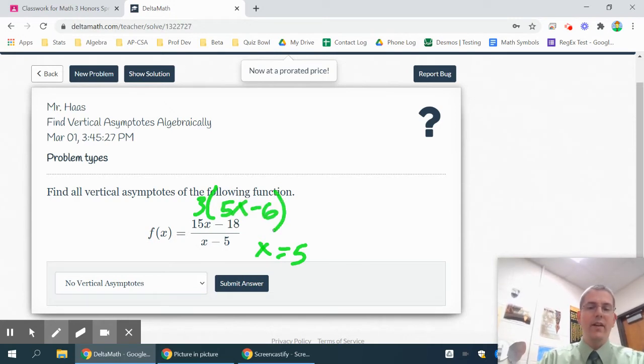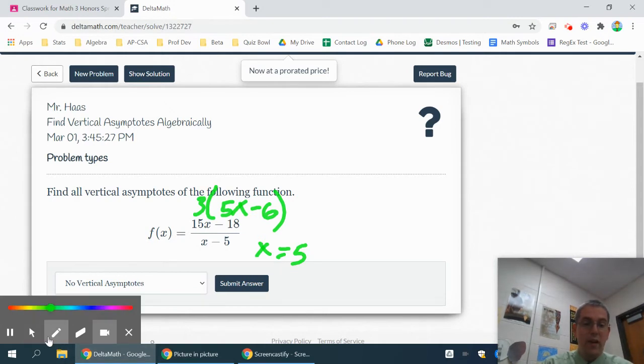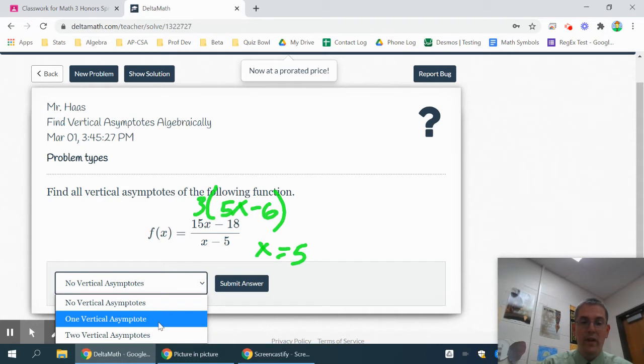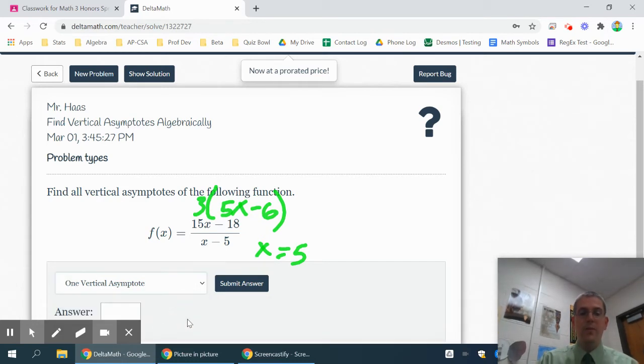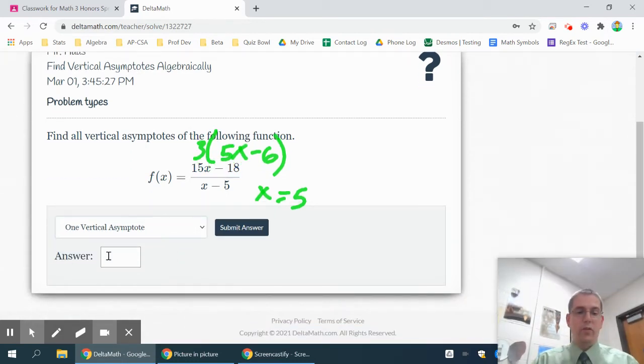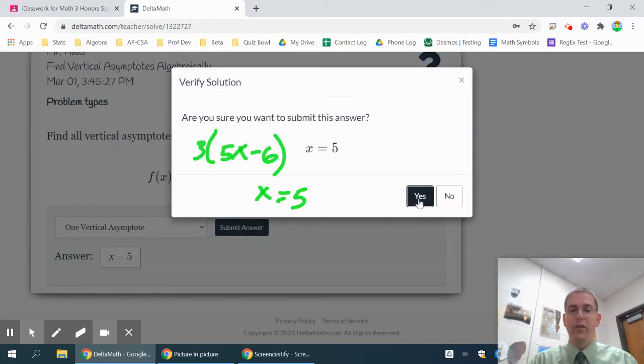Since this does not cancel out, that means this x minus 5 is a factor that does not cancel out and it causes a vertical asymptote. So what you would say is that there was one vertical asymptote and then you would just use your answer of x equals 5, submit your answer, and that should be correct.